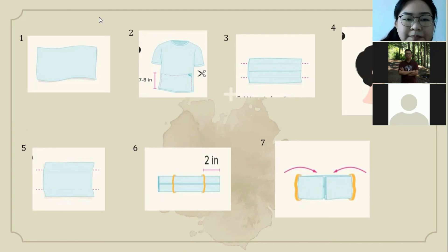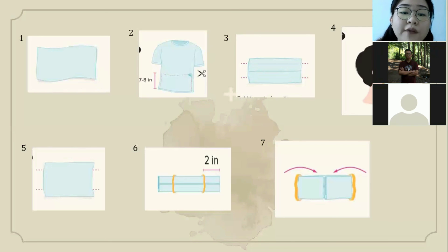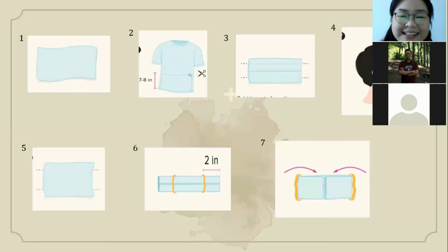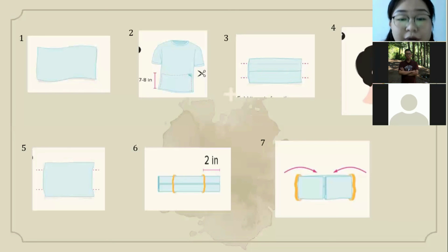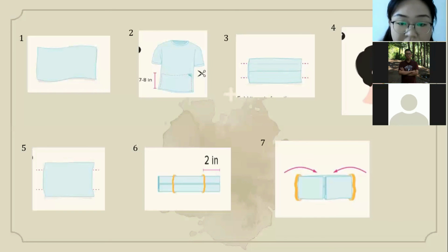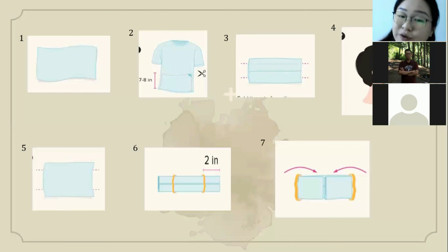Thank you, group one. For the other students, who wants to give a comment or feedback? Group three responds: I understand the procedures and the steps are clear, but I think they forgot to put numbers on the steps, like first, second, and so on. The teacher agrees: my evaluation for group one is that you forgot to put numbering on your text — numbering is very important in procedure text as it is one of its key characteristics. But overall, you did a really good job. The steps are clear, and the word choices are understandable. Congratulations!